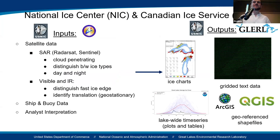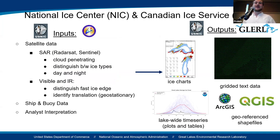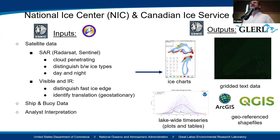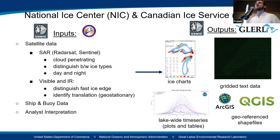Getting into the specifics: the main inputs are satellite data. Synthetic aperture radar is a really great tool — it can see through clouds, it's cloud-penetrating, it can distinguish between different ice types such as land-fast ice, and it's usable day and night. As far as outputs, we have various formats: JPEG images, charts which are still accessible to the general public without needing to write code, gridded text data, lake-wide values as plots and tables, and georeferenced shapefiles, which are really important for spatial analysis.